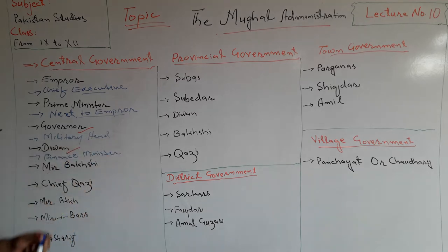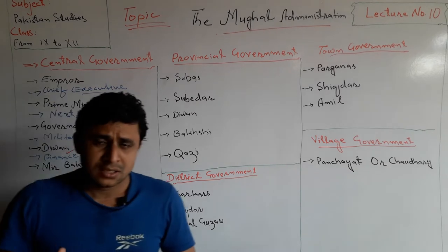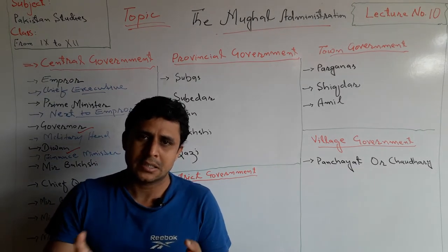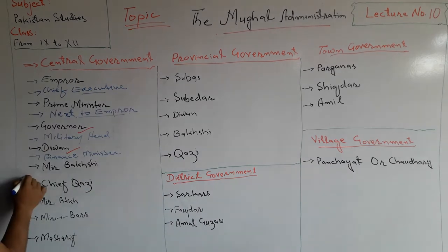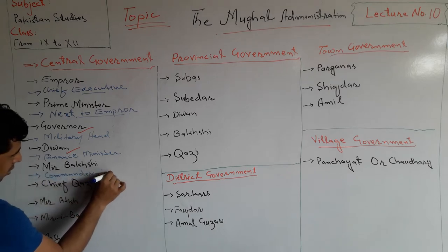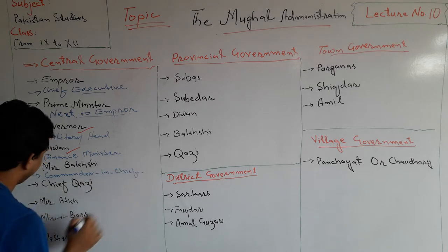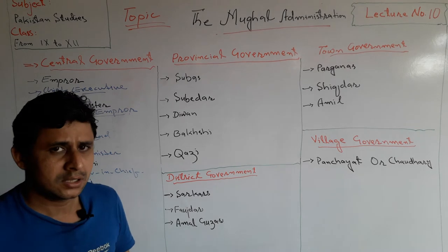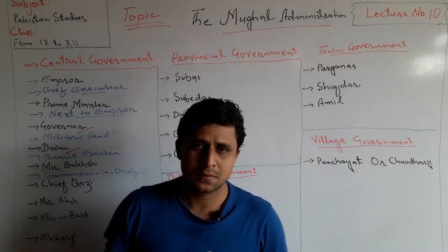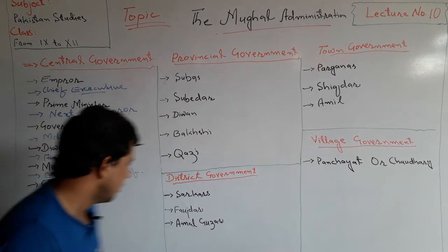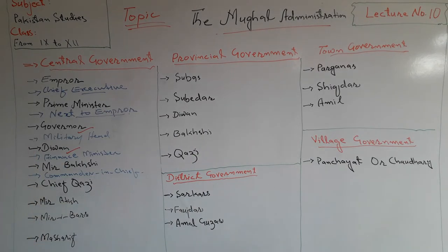Meer Bakshi was the Commander-in-Chief at the time of the Mughal Empire at the central level. He also looked after the military system of provinces and other regions under the Mughal Empire.